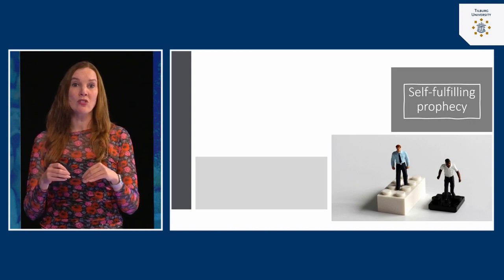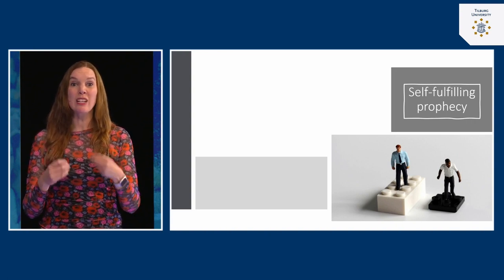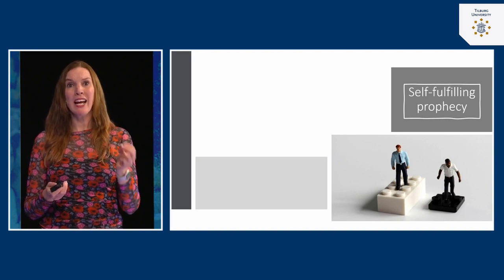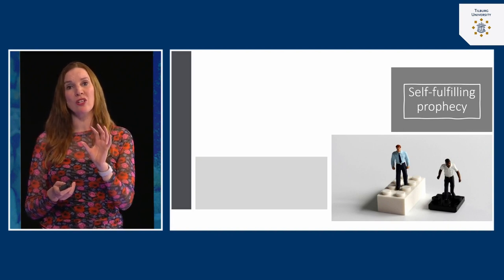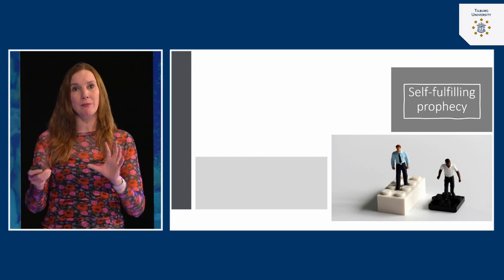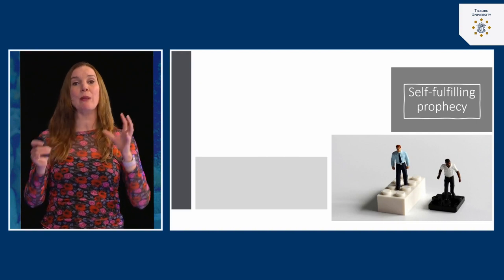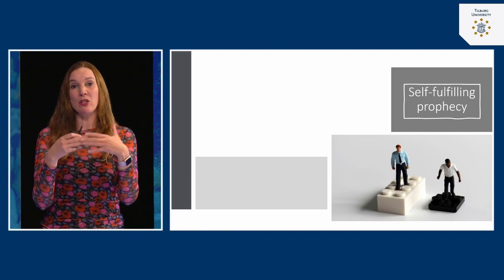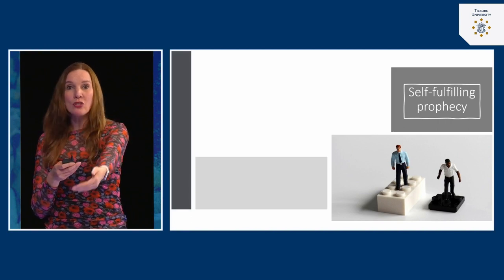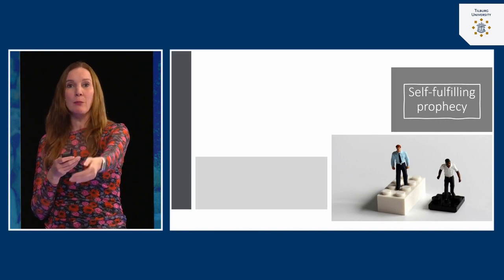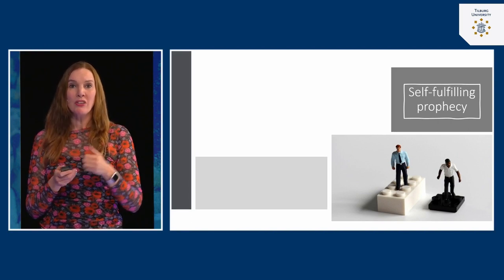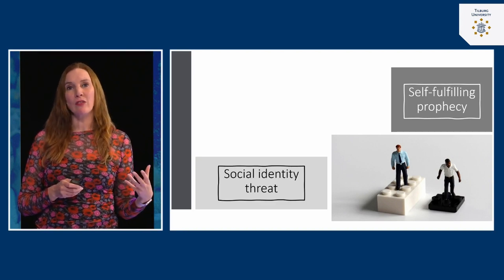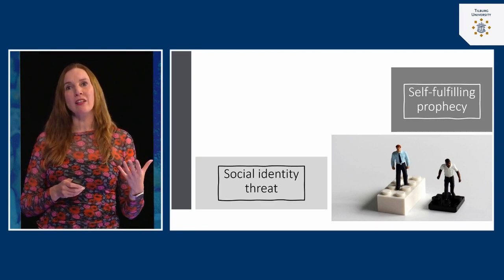Self-fulfilling prophecies is one of the ways in which members of minority groups actually reinforce their own stereotype. It's important to know that it's an interpersonal process — it happens between people. One person shows behavior based on expectations that evokes behavior in the minority group member. But there's also another process: social identity threat.